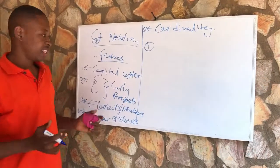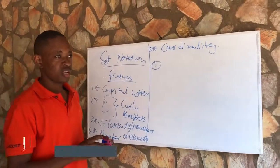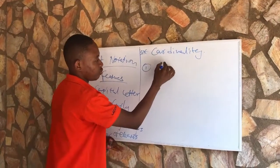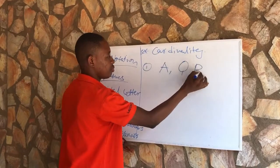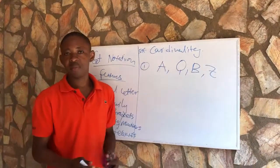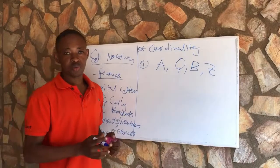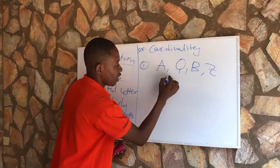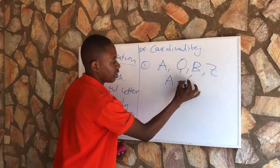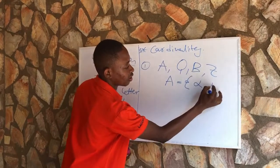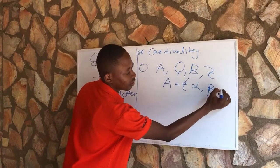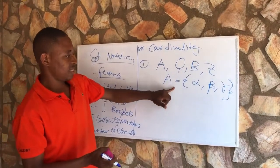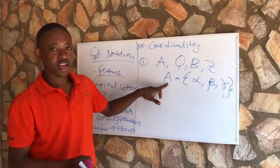A set is represented by a capital letter, meaning a set can be represented by any capital letter — for example, A, B, or Z. All these are capital letters and we can use them to represent a set. For example, we can have a set A which is made up of alpha and beta. This is a set and it is represented by a capital letter.